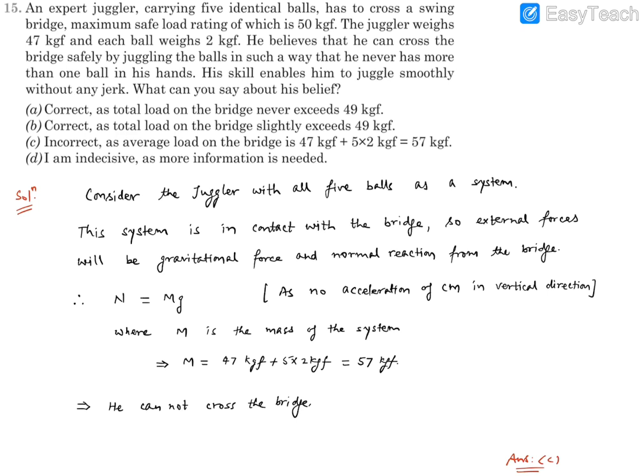However, he is not having only one ball in his hand. He has 5 balls in which 4 balls are in air and 1 ball will be in his hand during the crossing.